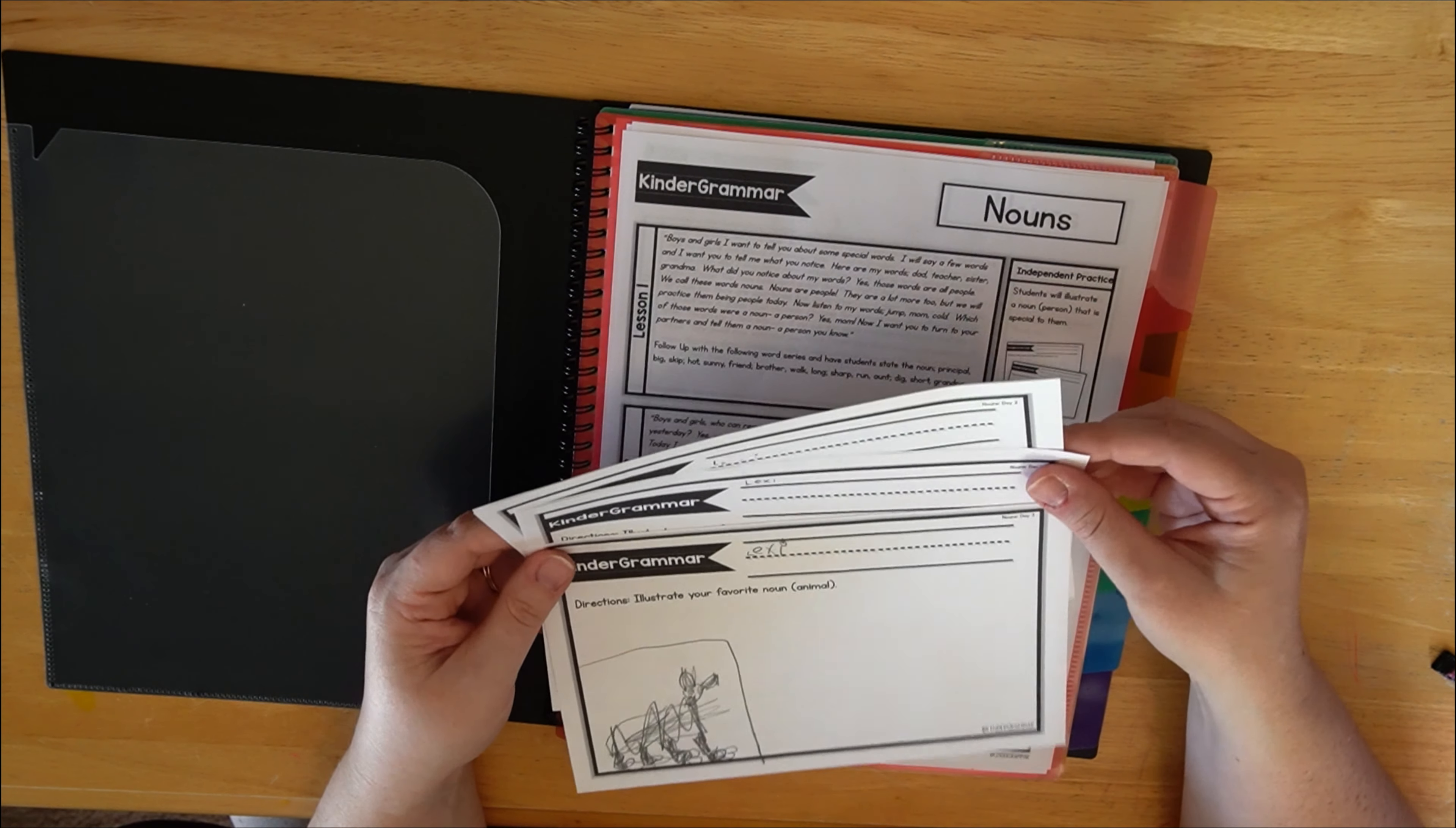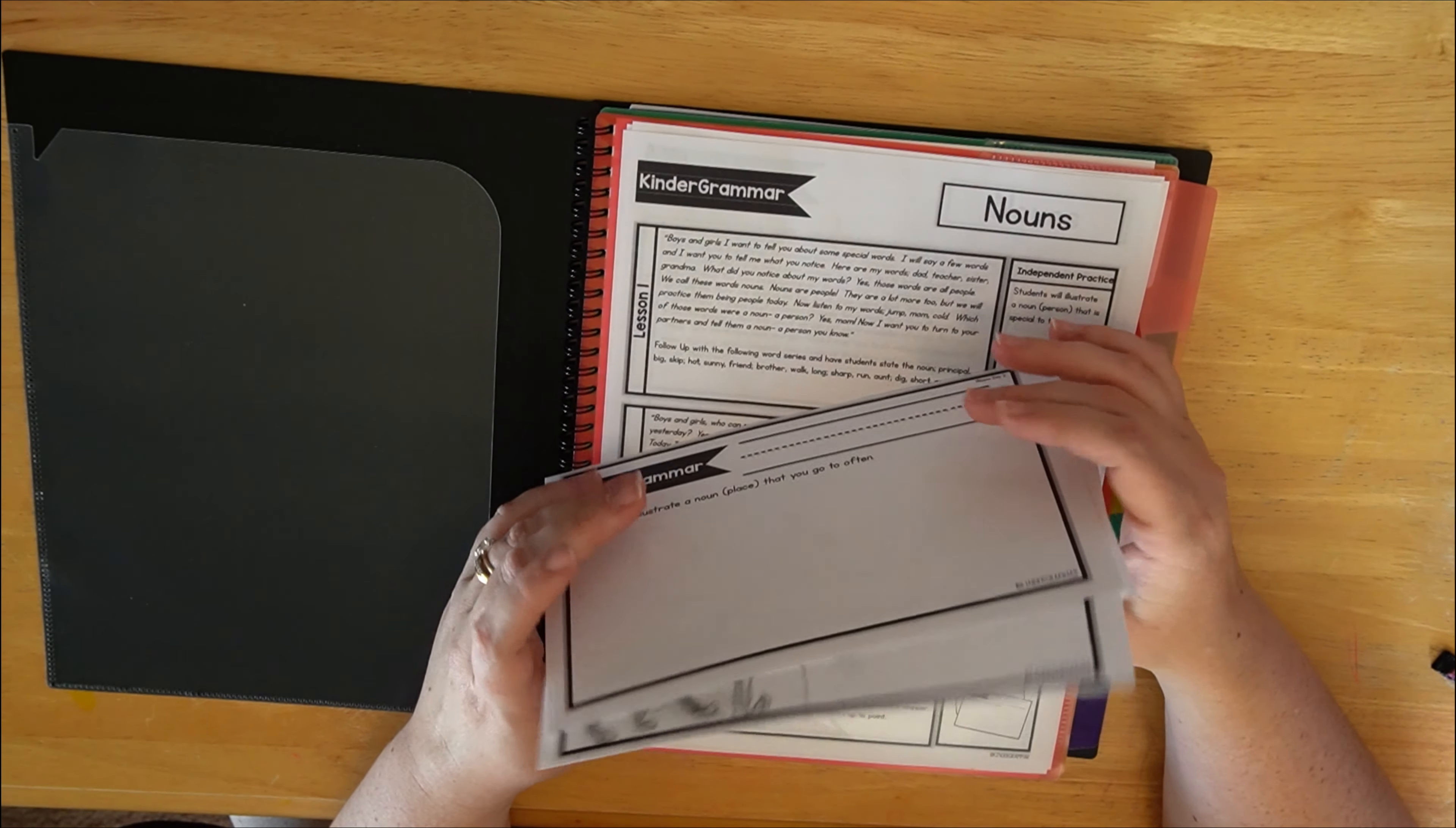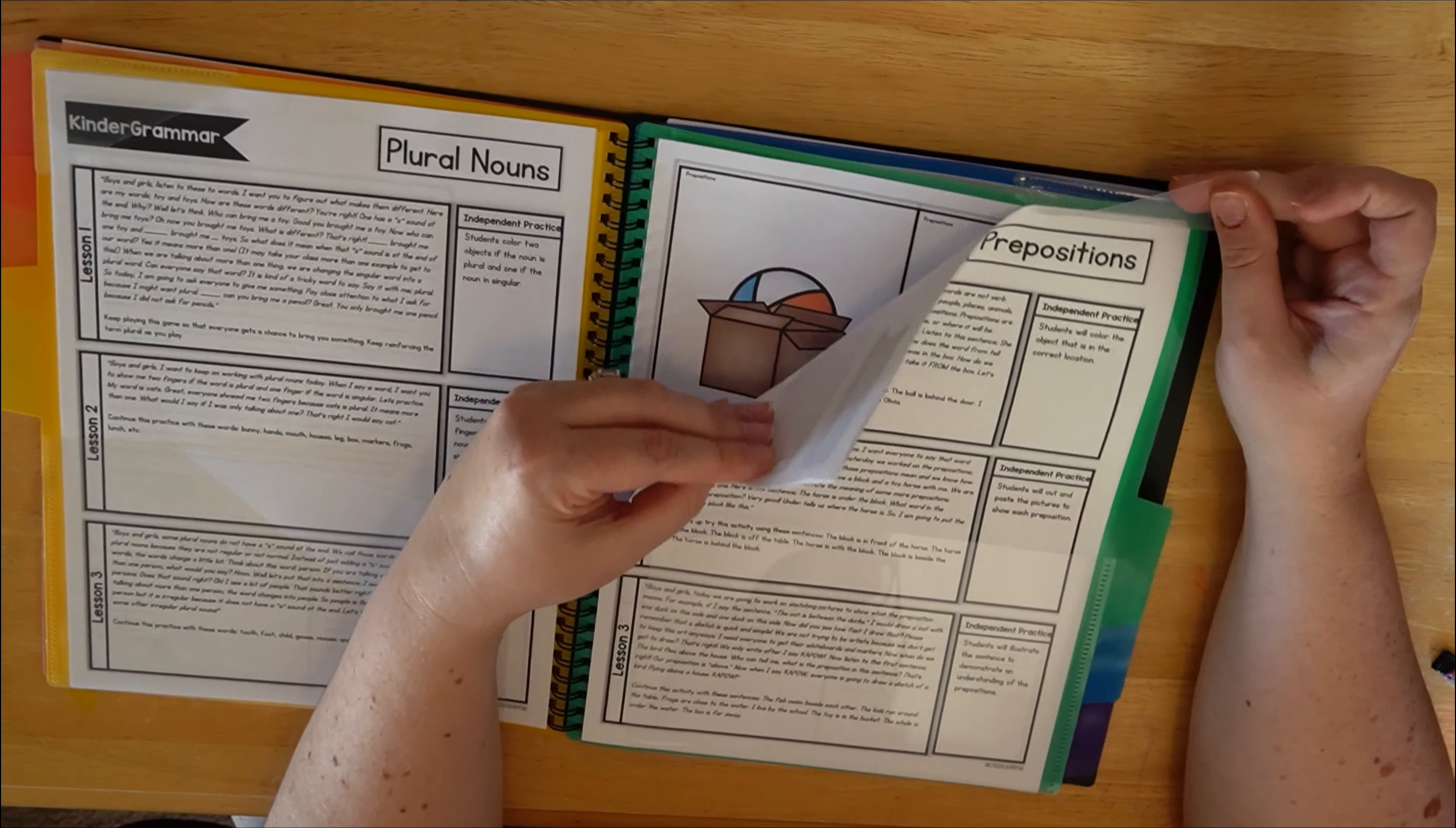But anyways, we learn about whatever we're supposed to learn about that day, and then they have an activity. Again, some of these are missing because she's hung them up. But you know, the very first day it says illustrate a noun person that is special to you. So she drew her best friend Leo. So that's just an idea of what they're doing. Again, we're not looking for anything extravagant. This is very reasonably paced. These are how I like things to be paced.